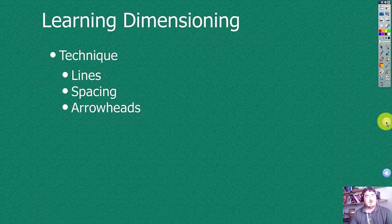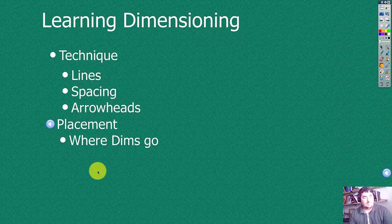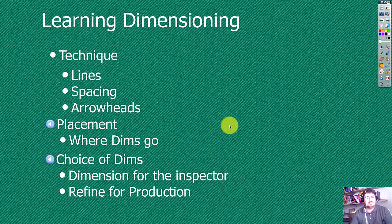We don't want dimensions too close to the part, nor do we want them too far away. We also have placement, so where dimensions go on the drawing, which views do they go on. And then the choice of dimensions. Usually we want a dimension for the inspector, how they're going to check the part to make sure it's a correct part.